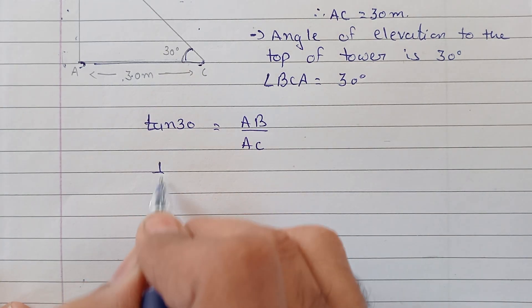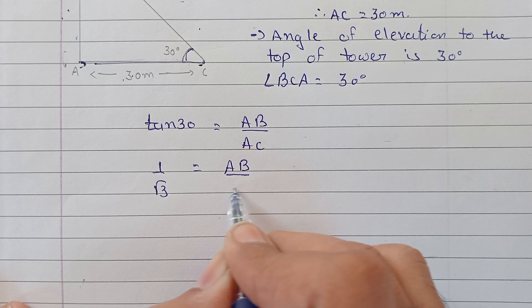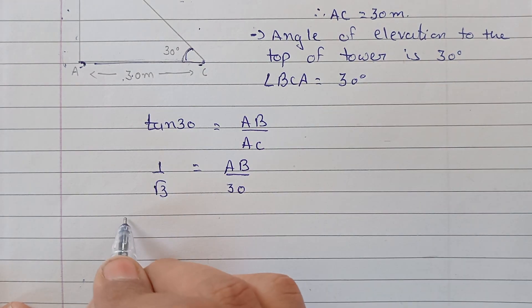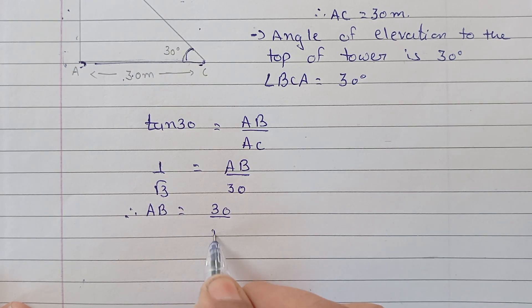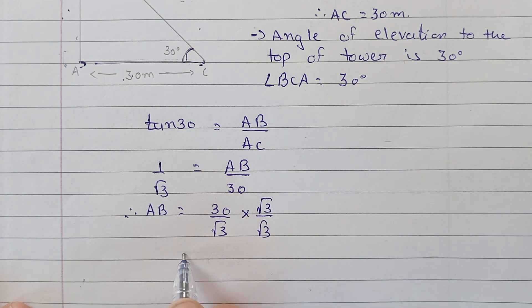Now tan 30 means it will be 1 by root 3. So that will be AB/30 = 1/√3, so AB = 30 into root 3